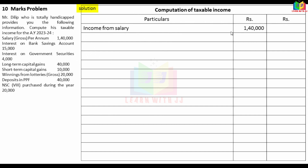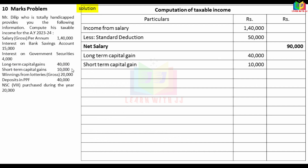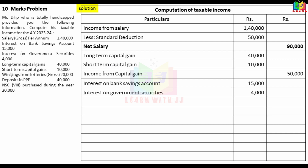Gross salary Rs.1,40,000 less standard deduction Rs.50,000 = net salary Rs.90,000. Long-term capital gain Rs.40,000, short-term capital gain Rs.10,000, total capital gains Rs.50,000. Income from other sources: interest on bank saving Rs.15,000, interest on government security Rs.4,000, winning from lottery Rs.20,000 — total Rs.39,000. Gross total income = Rs.90,000 + Rs.50,000 + Rs.39,000 = Rs.1,79,000.